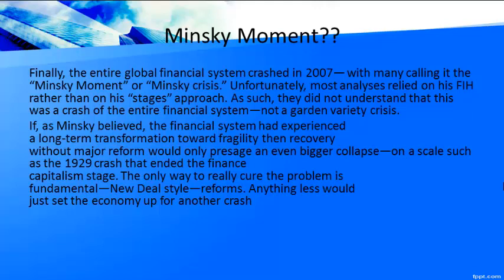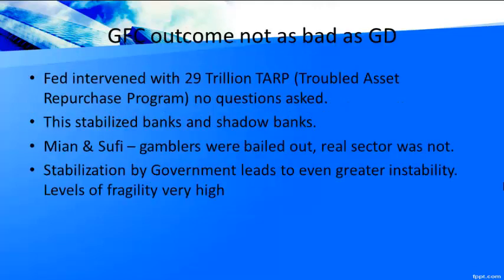The only way to cure this problem fundamentally is to change the nature of the system. The job guarantee is one big aspect required. If nothing is done — as has happened — the economy is set up for another crisis. What happened after the global financial crisis was not as bad as after the Great Depression because the Fed intervened to save financial institutions. There was the TARP program — the Troubled Asset Relief Program.